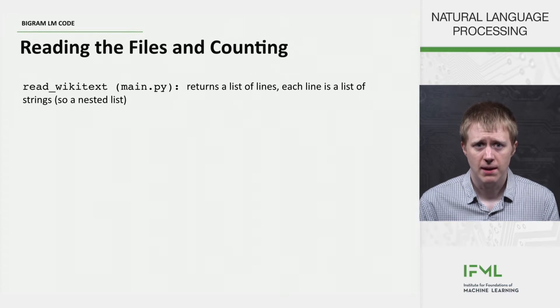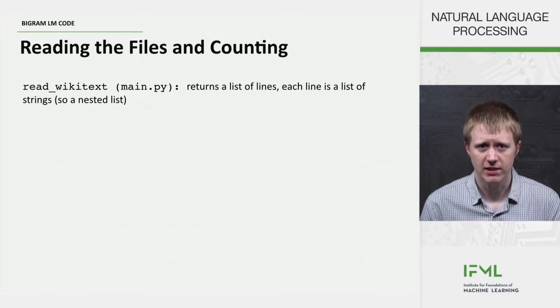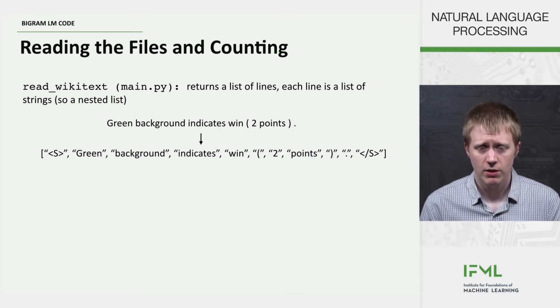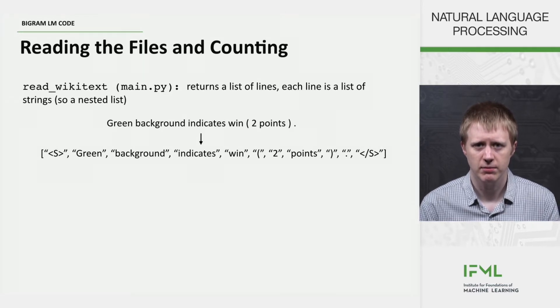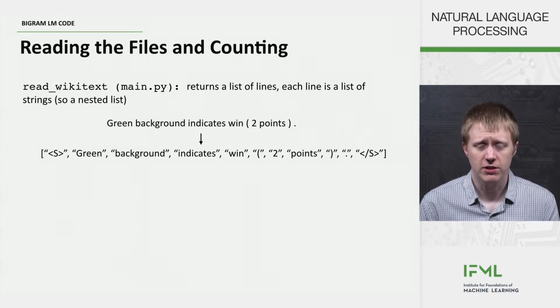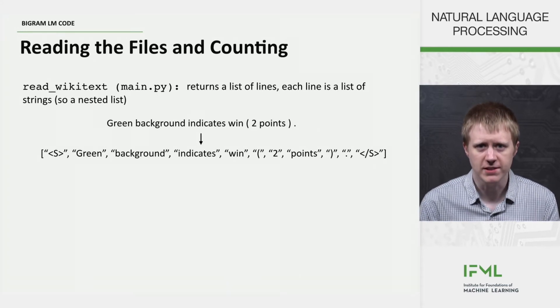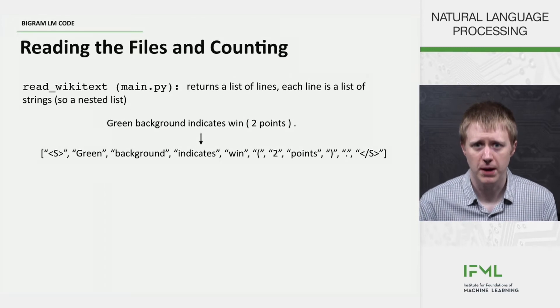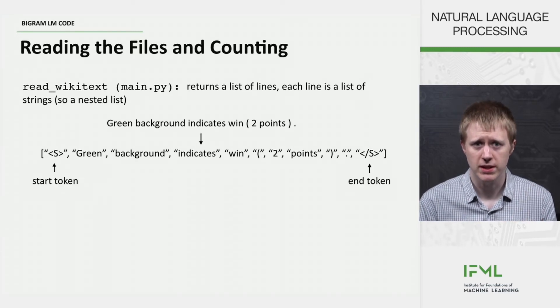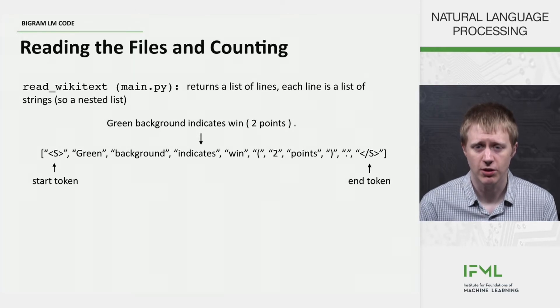So in main.py there's a read_wikitext function which returns a list of lines where each line is a list of strings. So if you look in the data files you're going to see things that look like this. Green background indicates when, parenthesis two points, close parenthesis period. And that's going to get turned into a list of strings that looks like this. So it's basically just splitting up these words by looking at the white space between them, but we've added also a start token at the beginning and an end token at the end.